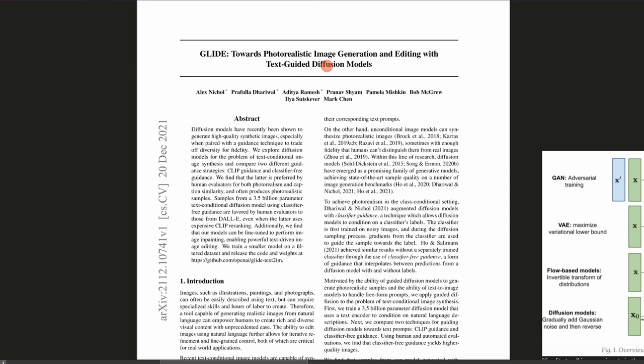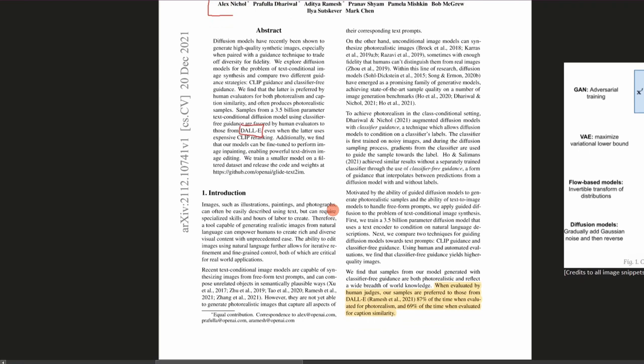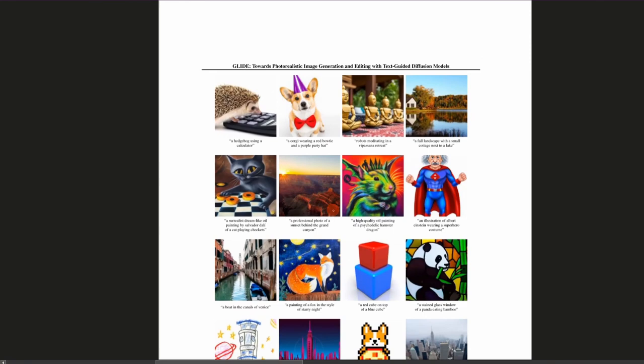What's up guys? In this video I'm covering GLIDE: towards photorealistic image generation and editing with text-guided diffusion models by the awesome OpenAI team. This is yet another iteration of OpenAI's efforts to improve upon text-conditioned image generation and image synthesis models. You're probably familiar with one of their previous models, namely DALL-E, which had amazing results, but as we're going to soon see, GLIDE has even better results, verified using human judges.